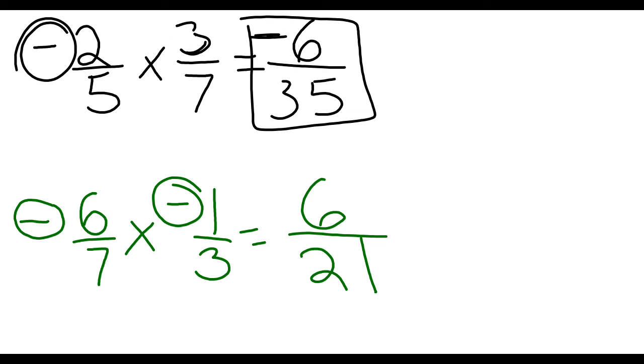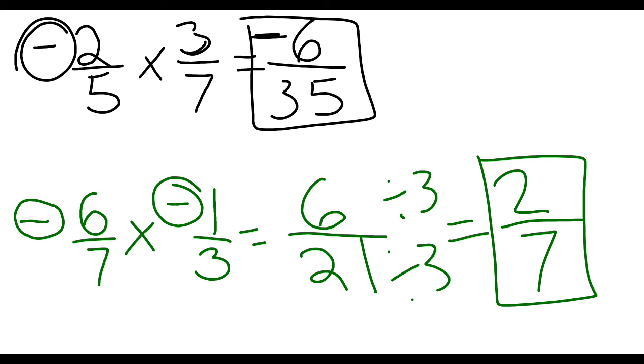Now 6 and 21 can both be divided by 3. So 6 divided by 3 is 2, and 21 divided by 3 is 7. So my final answer here is positive 2 sevenths.